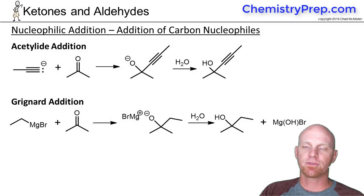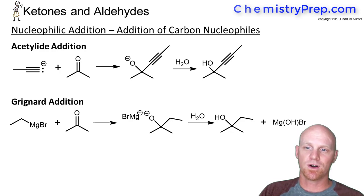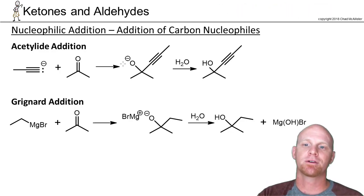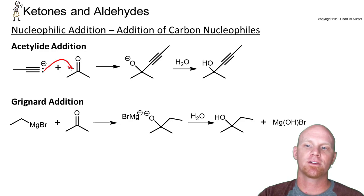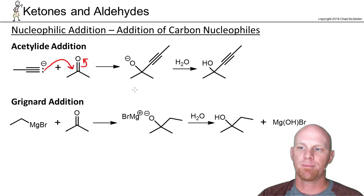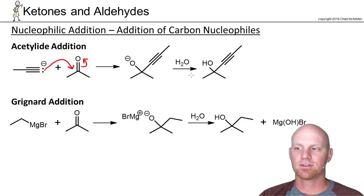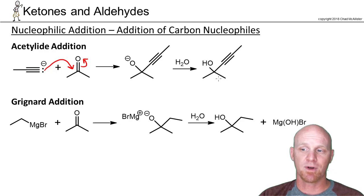Now we're going to talk about the addition of a few different carbon nucleophiles — two will be review, and two will be new. The review ones are addition of acetylide ions; you can add an acetylide ion to a ketone as well. We've done that in the past, and then you simply do an acid workup step in step two — whether you add H₂O or a little bit of dilute acid — to get your corresponding alcohol.